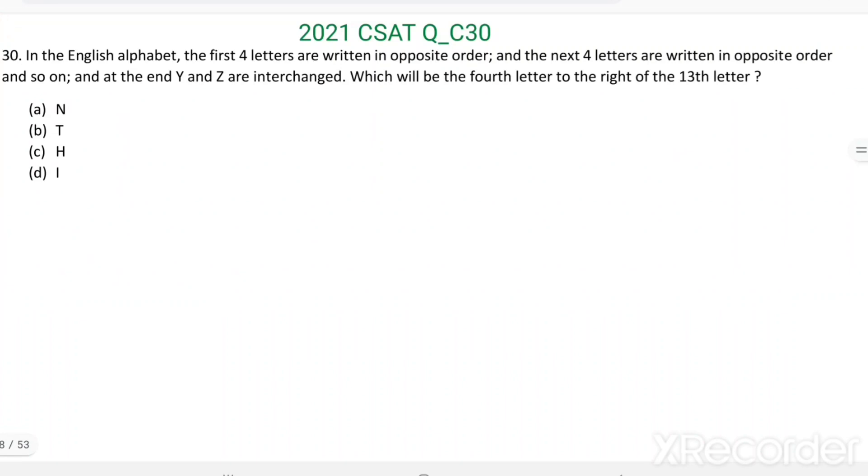Question number 30. In the English alphabet, the first four letters are written in opposite order and the next four letters are written in opposite order and so on. And at the end, Y and Z are interchanged, which will be the fourth letter to the right of the thirteenth letter.